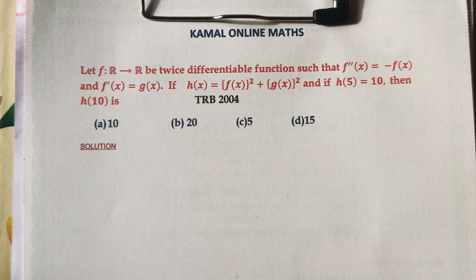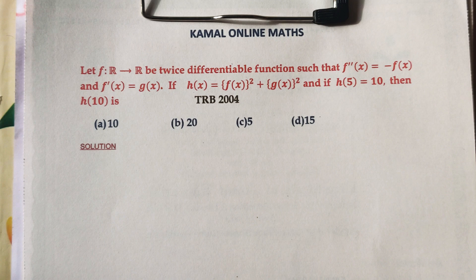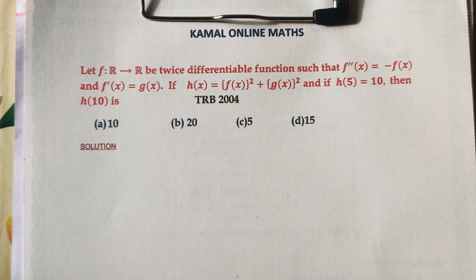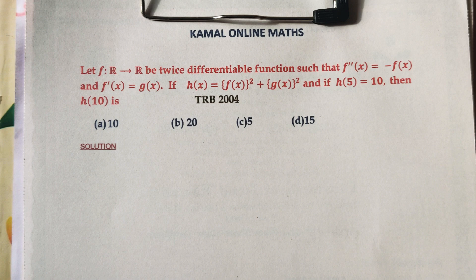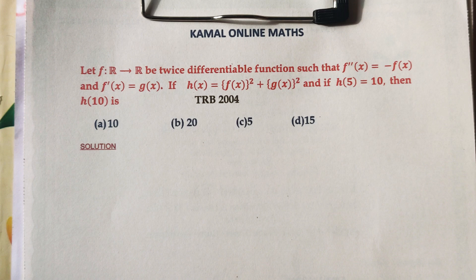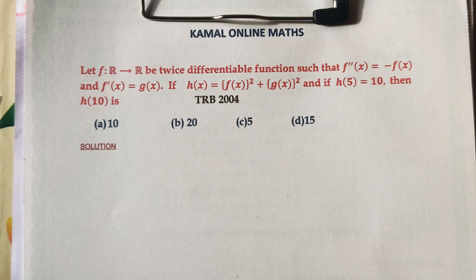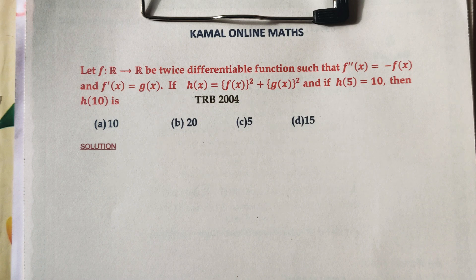F is a function from R to R, the set of all real numbers. F is a twice-differentiable function such that F double dash X equals minus F X and F dash X equals G X. If H of X is defined by F of X whole square plus G of X whole square, and if H of 5 equals 10, then what is the value of H of 10?